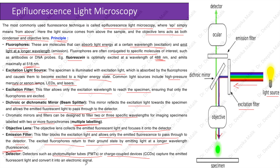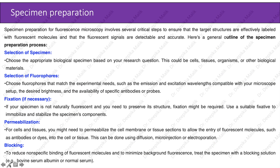The excited fluorophores return to the ground state by emitting light at a longer wavelength, known as fluorescence. Detectors such as photomultiplier tubes or charge-coupled devices capture the emitted fluorescence light and convert it into an electronic signal. Specimen preparation for fluorescence microscopy involves several critical steps to ensure that target structures are effectively labeled.